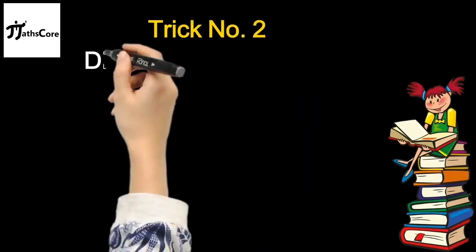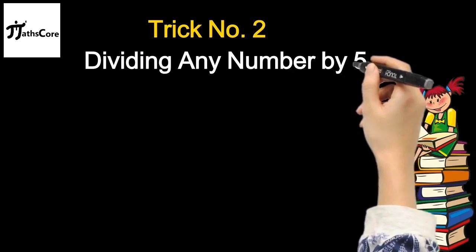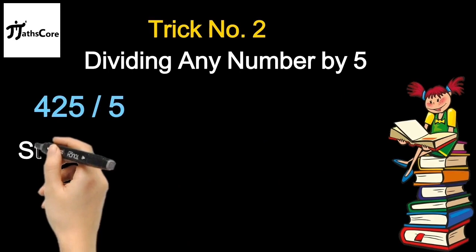Now it's time to learn trick number 2. Dividing any number by 5. Example is 425 divided by 5. To solve this example within 2 seconds you need to follow 2 steps.